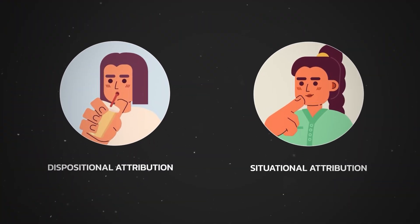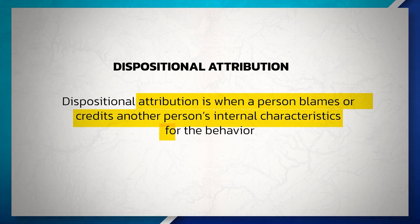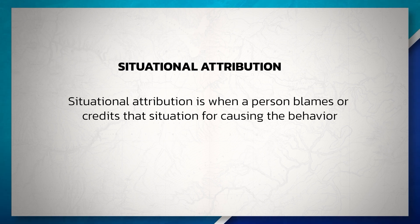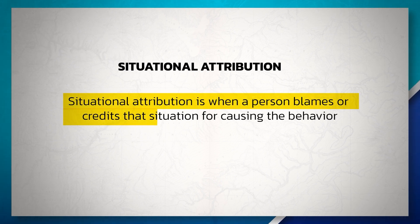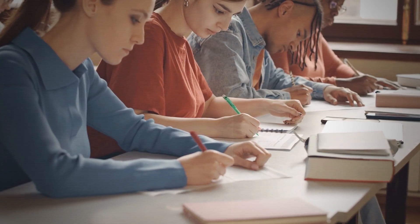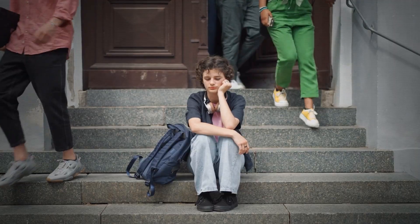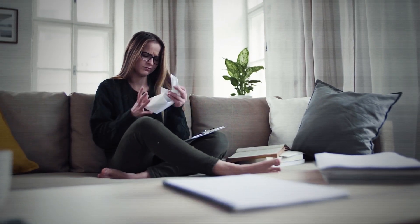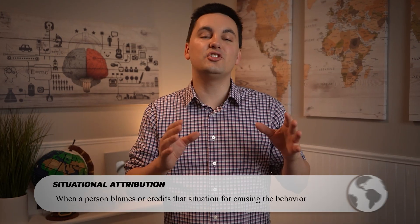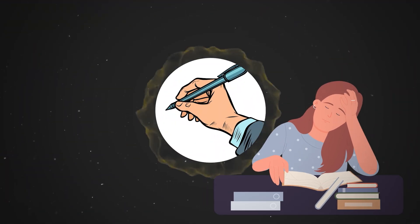This theory consists of dispositional attribution and situational attribution. Dispositional attribution is when a person blames or credits another person's internal characteristics for the behavior, while situational attribution is when a person blames or credits the situation for causing the behavior. For instance, let's say you're taking the AP exam and during the exam, the person next to you keeps tapping their pencil on their desk. At the end of the exam, you complain that the test didn't go well because you couldn't concentrate, and that you would have done better if the person next to you stopped tapping their pencil. This would be situational attribution — you are blaming the sound of the pencil for your poor performance.